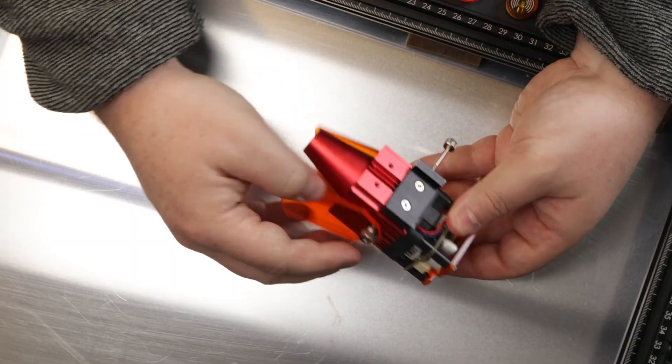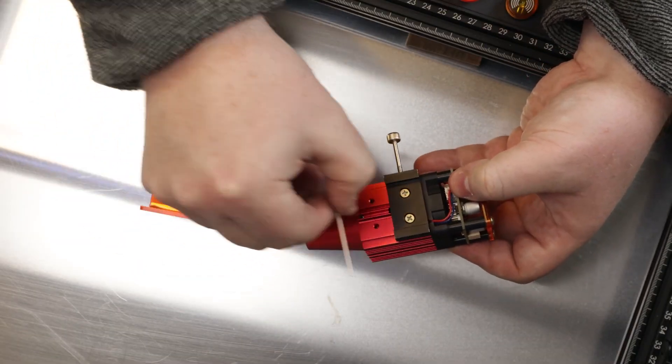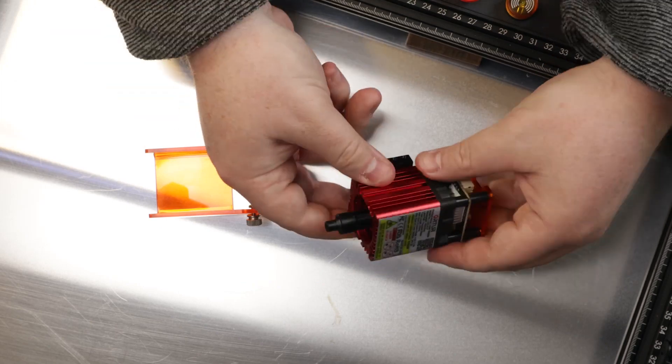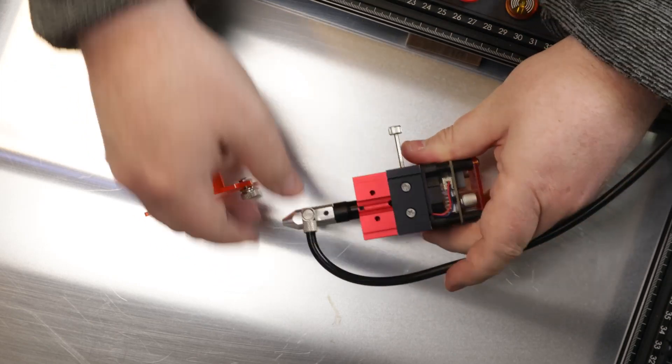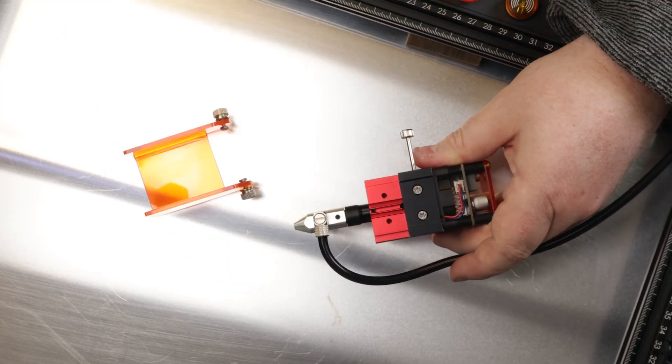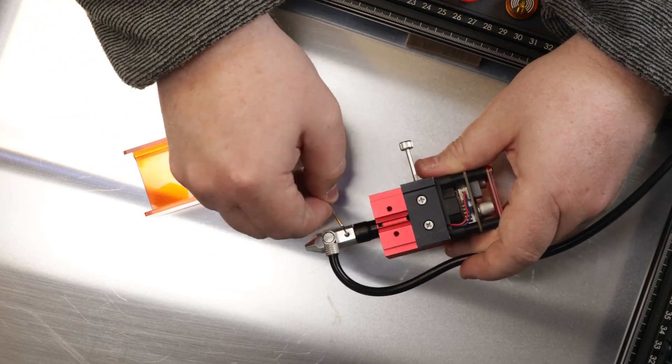Attaching the air assist itself is very simple. When the machine is unplugged, disconnect the laser, loosen the grub screw and unscrew the nozzle. Then place the air assist and tighten the grub screw.